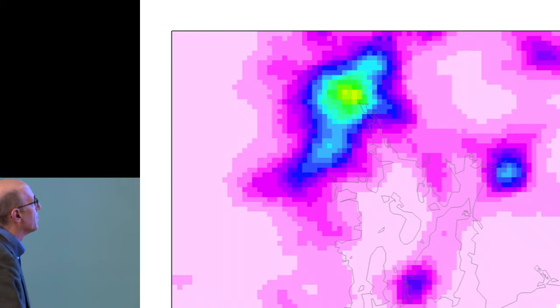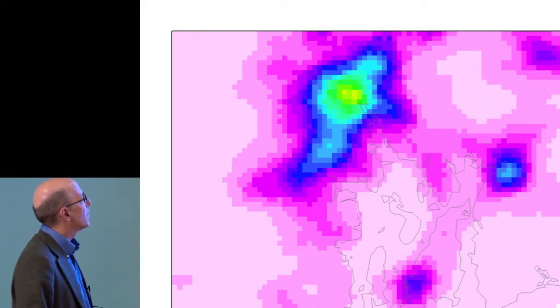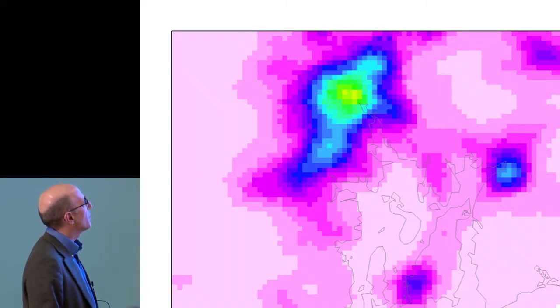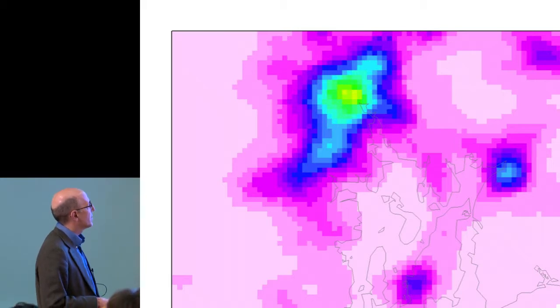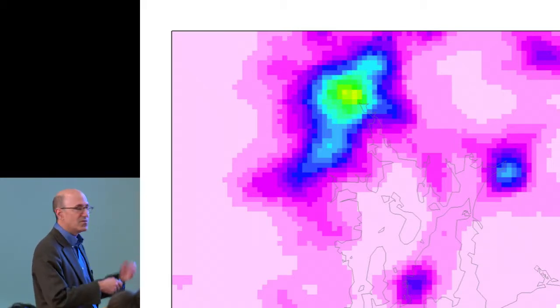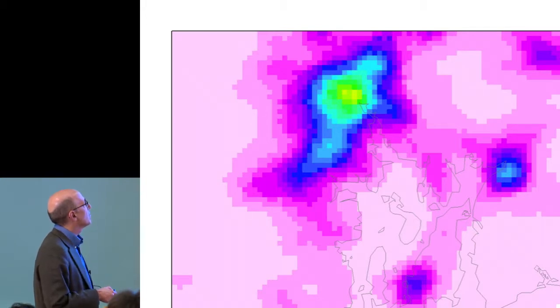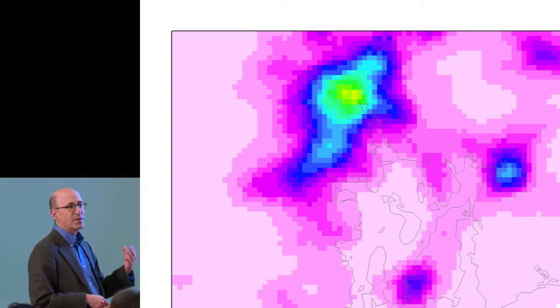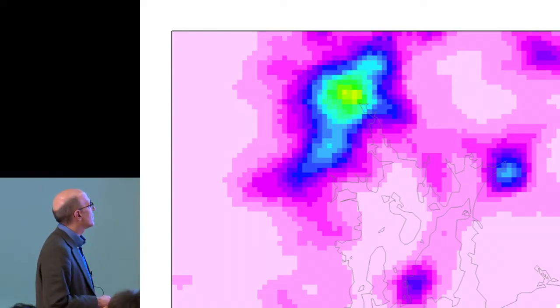The underlying data are in pixels of 30 arc seconds by 30 arc seconds of longitude or latitude — slightly less than one kilometer by one kilometer at the equator. Here's what the data look like for a place some of us know well: Providence. Here's Narragansett Bay, Providence, Warwick, Cranston, New Bedford, Newport. There's a lot of very fine local variation — it's an incredibly rich form of data for looking at the world up close.